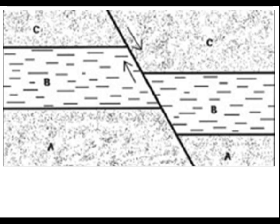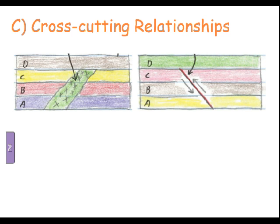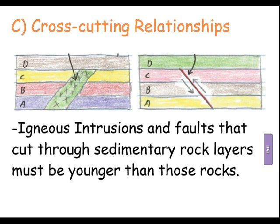Here we see layers A, B, and C have been faulted, so the fault has to come after rock layers A, B, and C — the fault must be younger than those layers. It's the same with intrusions: here's a darker rock intruding into lighter-colored rock, and that intrusion has to happen after. That magma has to be younger. We call this the principle of cross-cutting relations. In both diagrams, layers A, B, and C were either intruded or faulted, while layer D was not — so layer D must be younger than the intrusion or the fault.